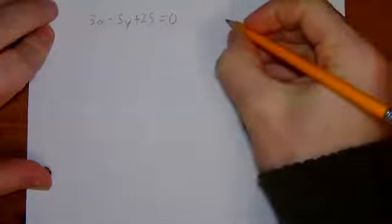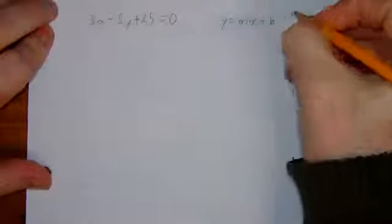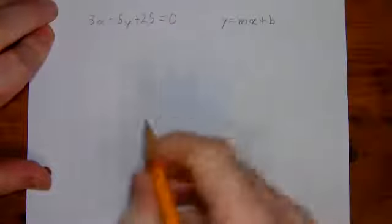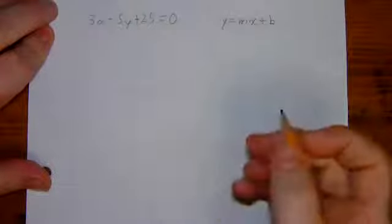But now, instead of trying to get the x all by itself on one side and a number on the other side, we're going to be trying to get things rearranged to slope-intercept form, also known as y equals mx plus b. And really, there's the focus, this means that we're trying to get the y isolated all by itself instead of the x, which is what we'd normally do if our goal was to solve.